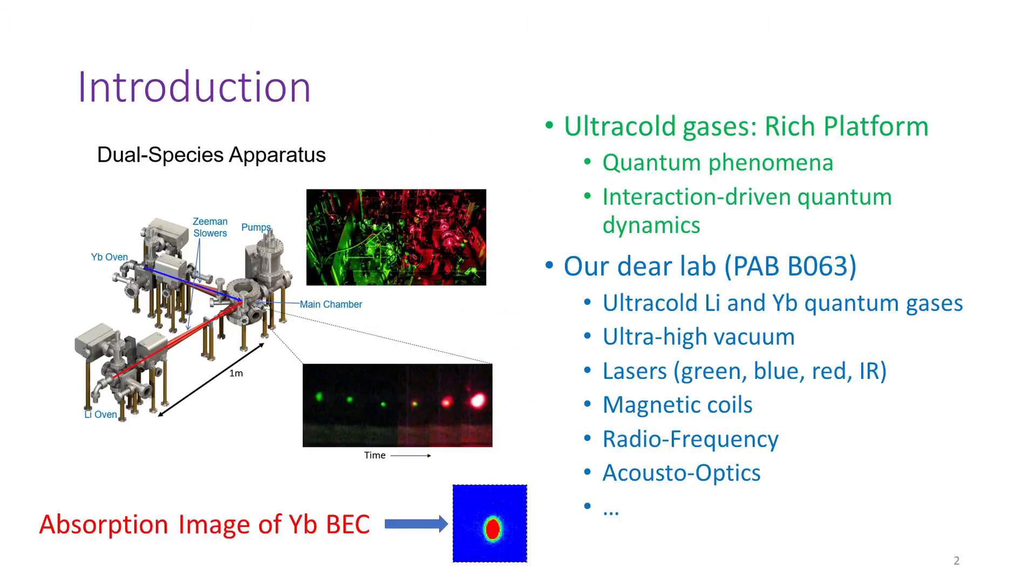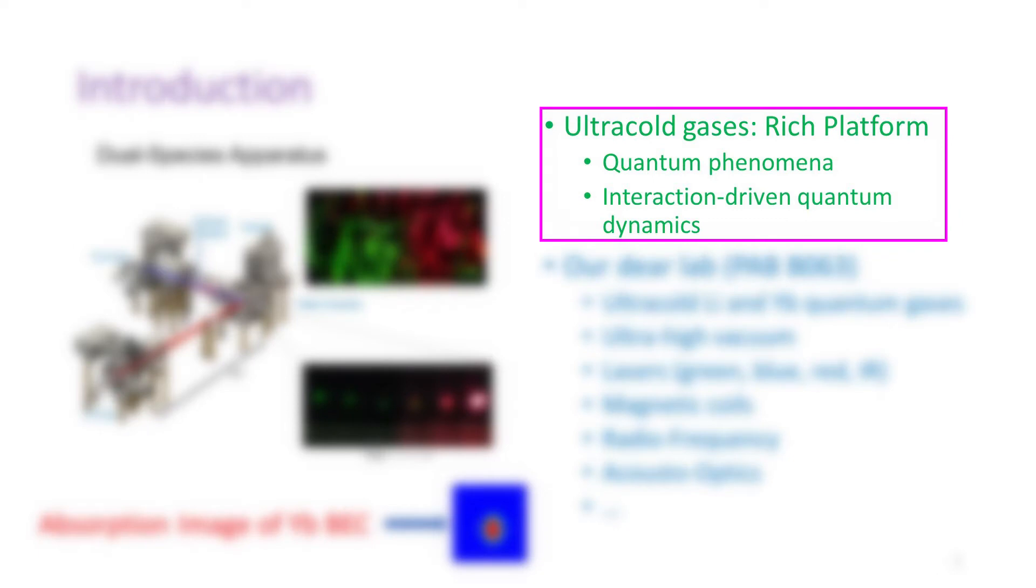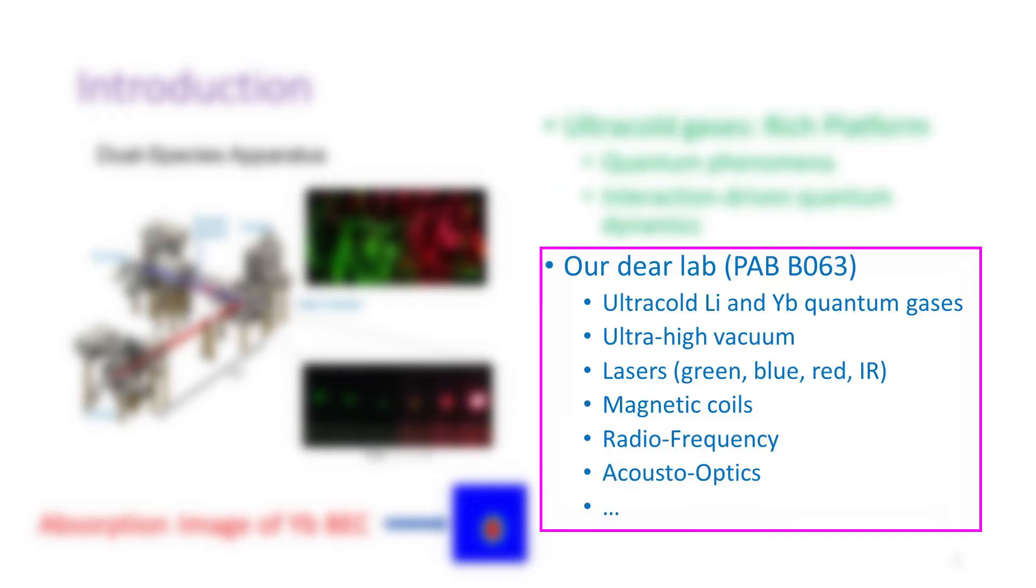Let's jump right in. Firstly, a brief introduction. The ultracold gases are a very rich platform to study quantum phenomena such as interaction-driven quantum dynamics. Our dear lab, located in the basement of the Physics Astronomy Building on the Seattle campus of University of Washington, conducts our research using ultracold lithium and ytterbium quantum gases. The technologies we use in our lab include ultra-high vacuum, high-power lasers of different wavelengths, magnetic coils, radio-frequency electronics, acousto-optics, and so on.